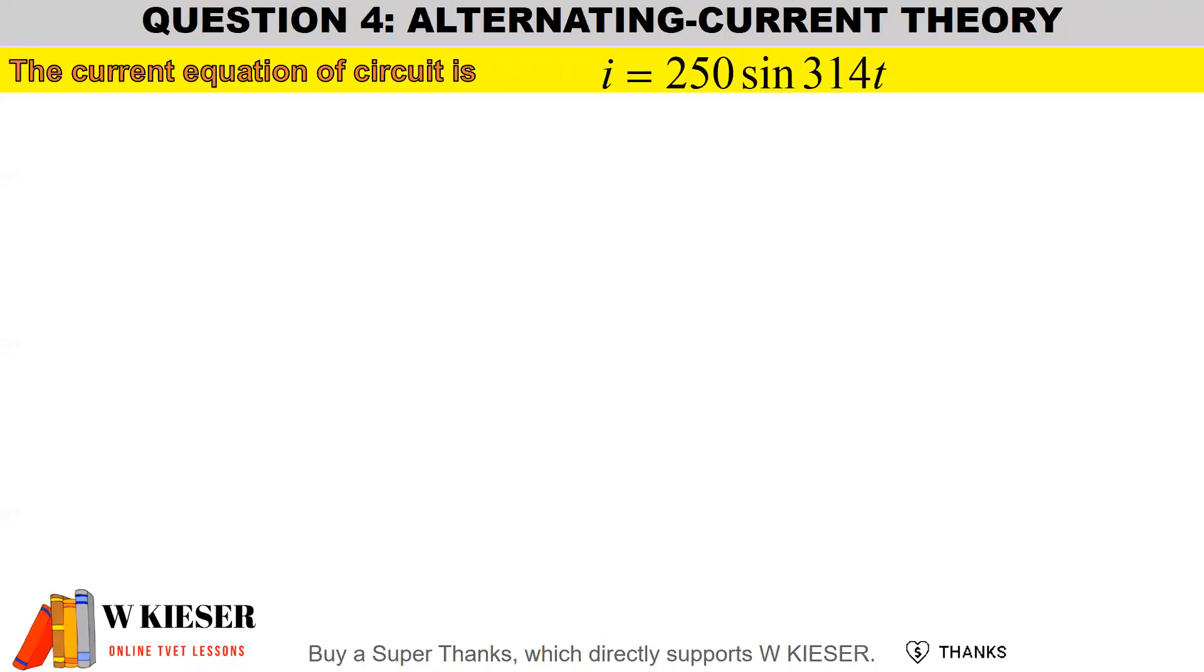In question four from alternating current theory we have an equation for current. It is the instantaneous value which is equal to 250 sine, and the angular velocity in radians per second is 314 multiplied by small letter t which represents time. Remember to convert radians to degrees we multiply by 57.3.